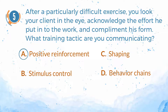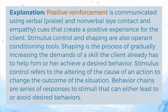The answer is A — positive reinforcement. Positive reinforcement is communicated using verbal cues such as praise, and non-verbal cues such as eye contact and empathy, that create a positive experience for the client. Stimulus control and shaping are also operant conditioning tools. Shaping is the process of gradually increasing the demands of a skill the client already has to help achieve a desired behavior. Stimulus control refers to altering the cause of an action to change the outcome. Behavior chains are series of responses to stimuli that can either lead to or avoid desired behaviors.